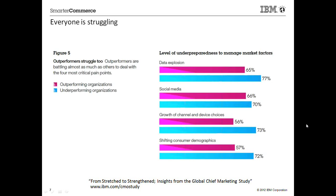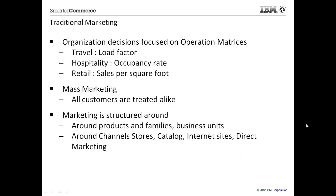This slide is about everyone struggling. The survey of outperforming and underperforming organizations in terms of marketing found that there's not a huge difference — only a marginal difference in their preparedness. So even outperforming organizations are not really well prepared for the challenges faced by marketing organizations and chief marketing officers.